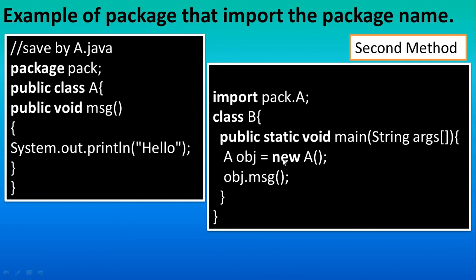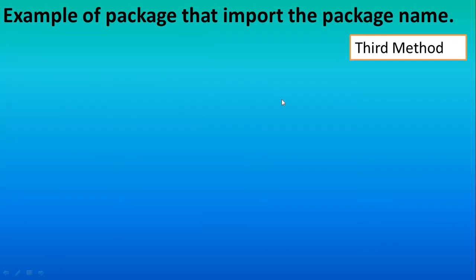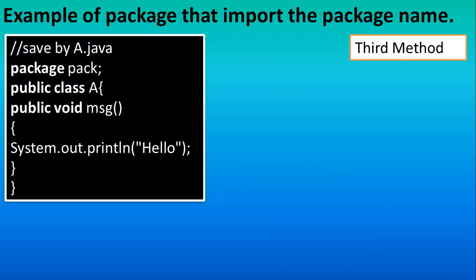The rest of the code remains the same — you just create the object of A and access the method. This is the object of A which is present in the other class. You can give this file the same name b.java.